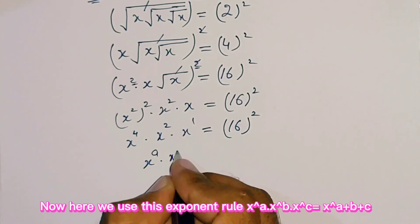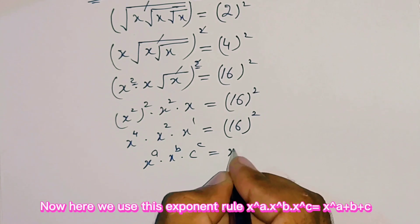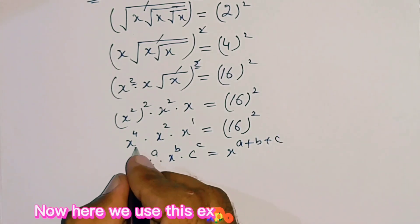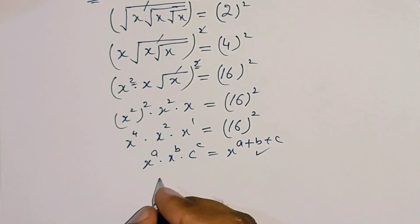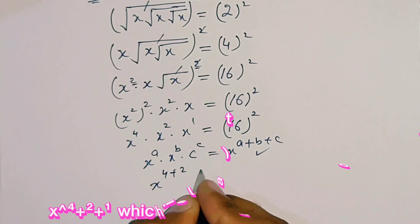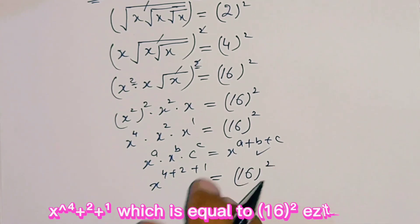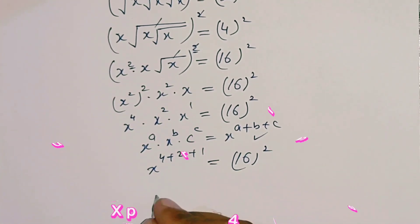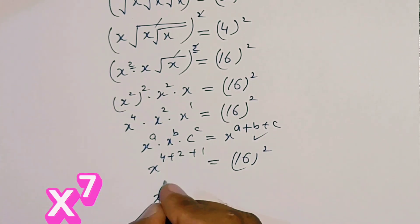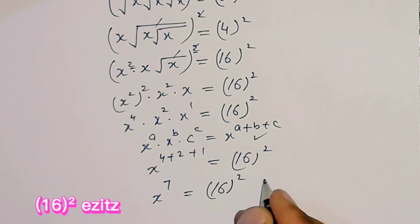Now here we use the exponent rule: x power a times x power b times x power c equals x power (a plus b plus c). Applying this rule: x power (4 plus 2 plus 1) equals 16 power 2. So 4 plus 2 plus 1 equals 7, giving us x power 7 equals 16 power 2.